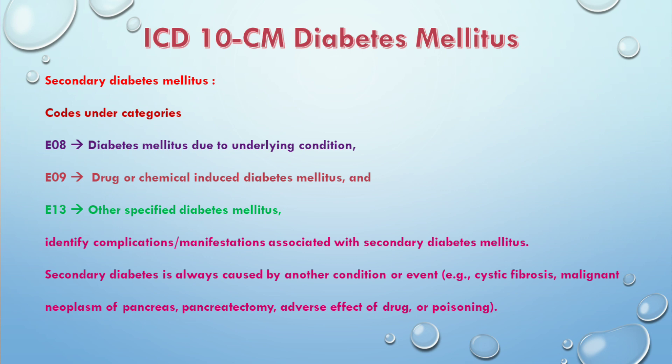Next is secondary diabetes mellitus. Secondary diabetes is when the patient develops diabetes due to some underlying disease. The codes under categories E08, E09, and E13 are for secondary diabetes mellitus. E08 is diabetes mellitus due to underlying conditions.